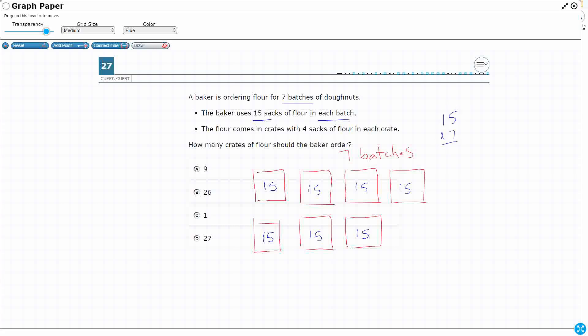Let's just do 15 times seven. So that's 35, carry the three, seven times one is seven, add the three, ten. So I need 105 sacks of flour.